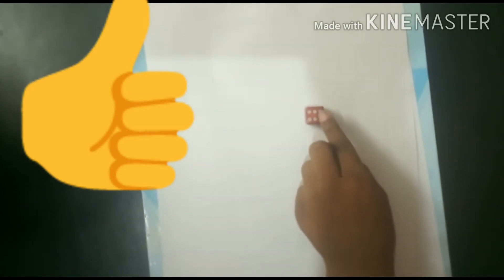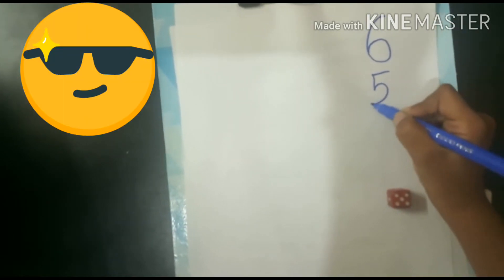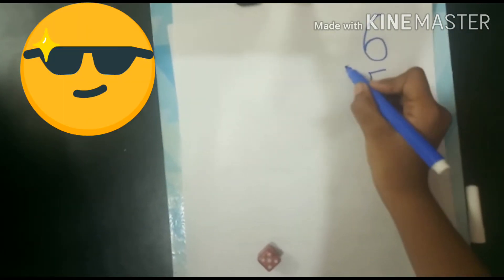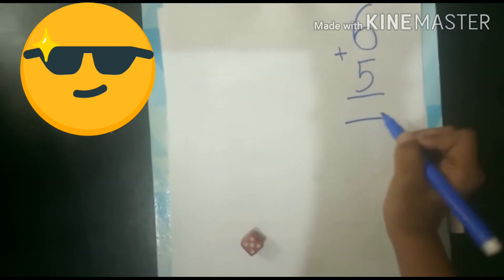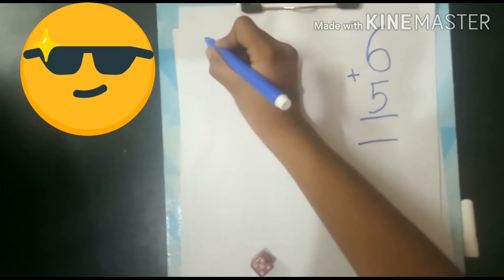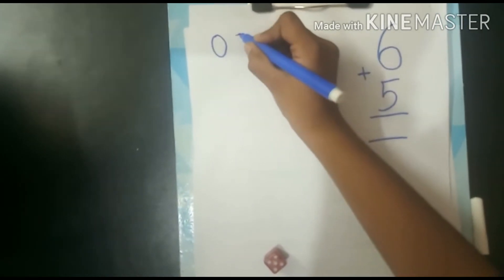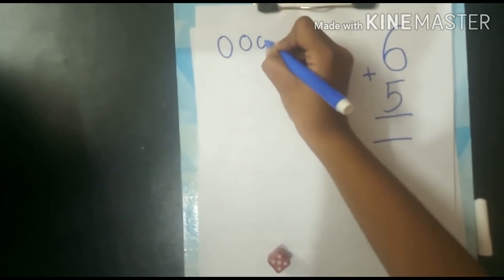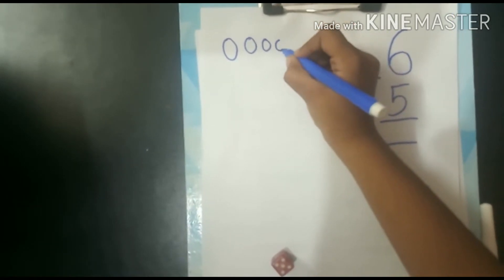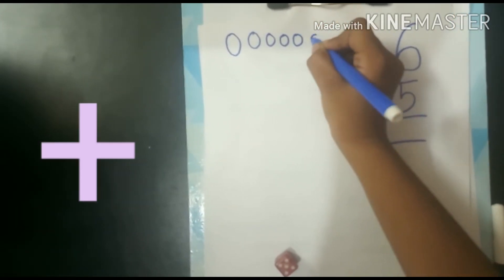We throw dice. The number is 6. We write 6. Then we will again throw. The number is 5. Then we will make balls. 1, 2, 3, 4, 5, 6.